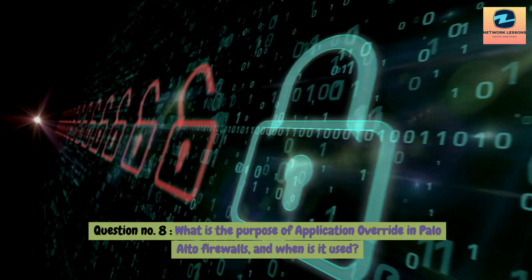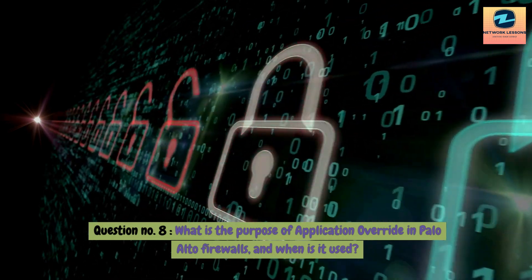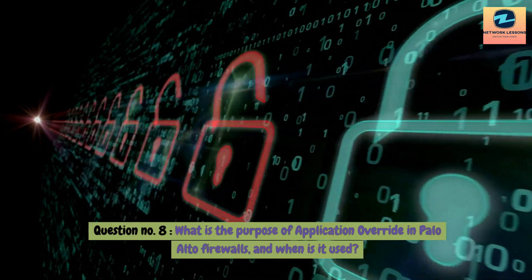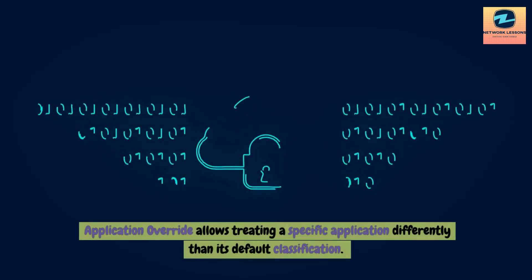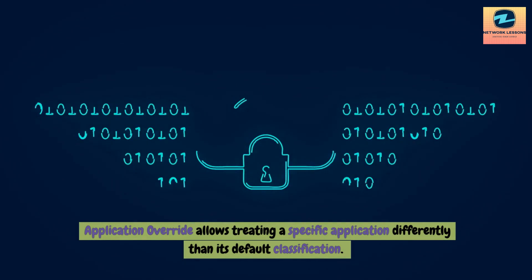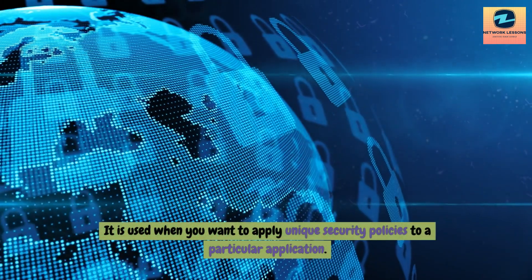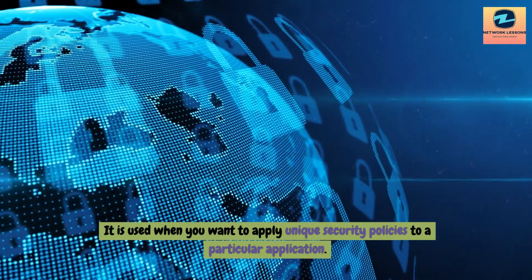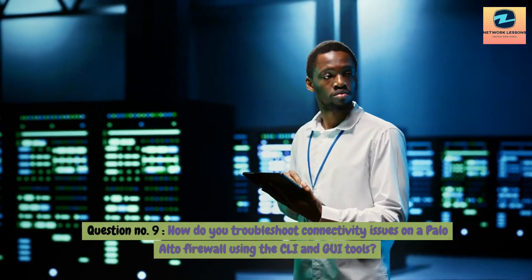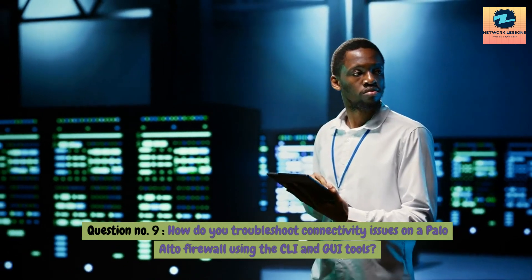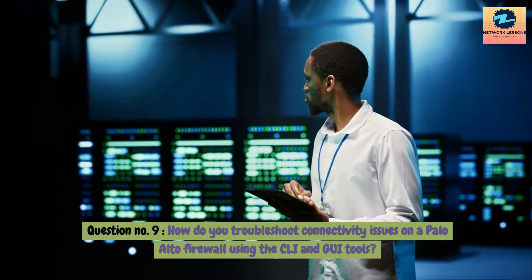Question 9: What is the purpose of application override in Palo Alto firewalls and when is it used? Answer: Application override allows treating a specific application differently than its default classification. It is used when you want to apply unique security policies to a particular application.